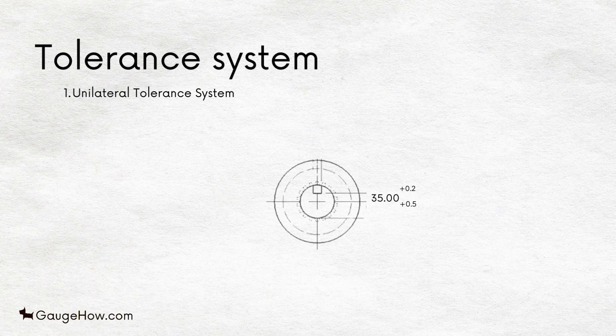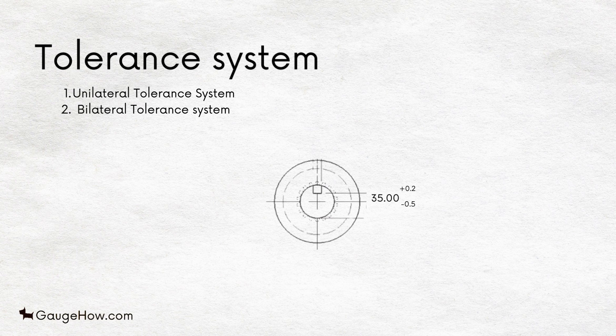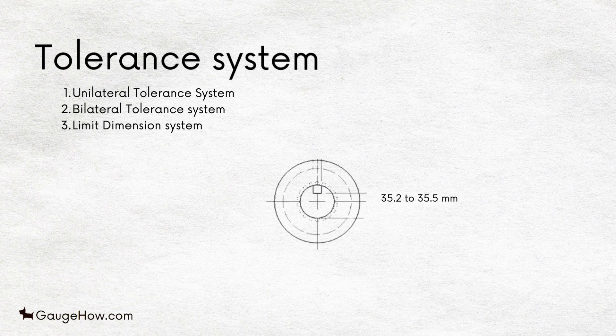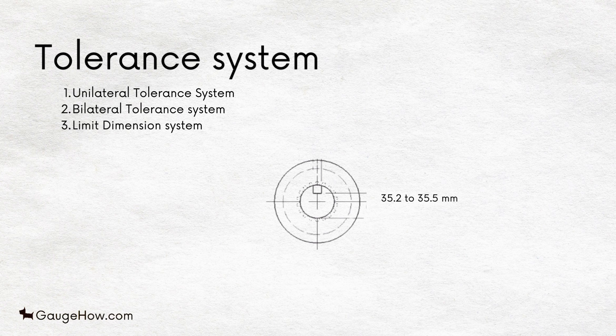Bilateral Tolerance System. For example, 35.00 plus 0.2 minus 0.5. Limit Dimension System. In this system, the size and the deviation of the part are specified by only maximum and minimum dimension. For example, 35.2 to 35.5 mm.